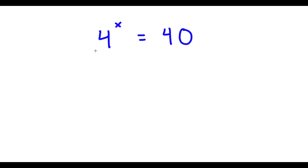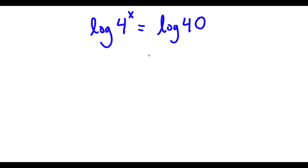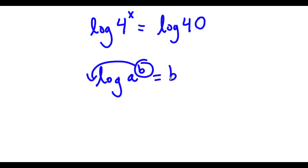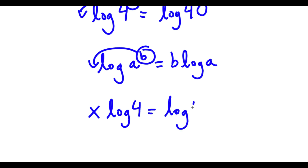In this problem, I have 4 to the power of x is equal to 40. To solve this, I'm going to first start by taking the log on both sides. So now I have log 4 to the power of x is equal to log 40. If I have something in the form log a to the power of b, I can move the exponent b to the front, so it becomes b times log a. In this case, I have log 4 to the power of x, so I can move x to the front. So now I have x times log 4 is equal to log 40.